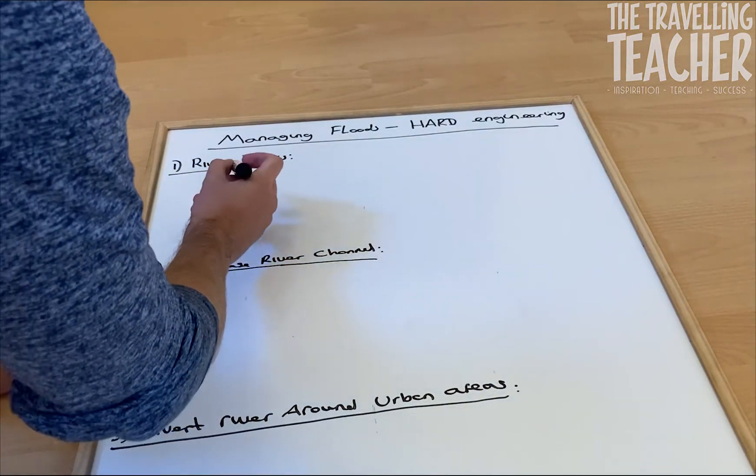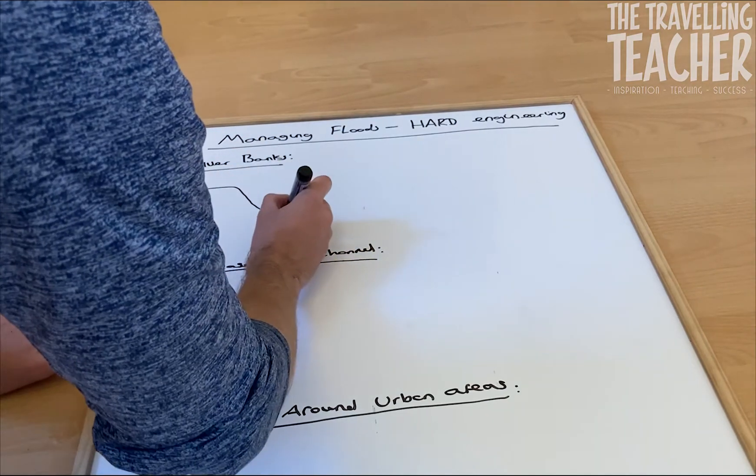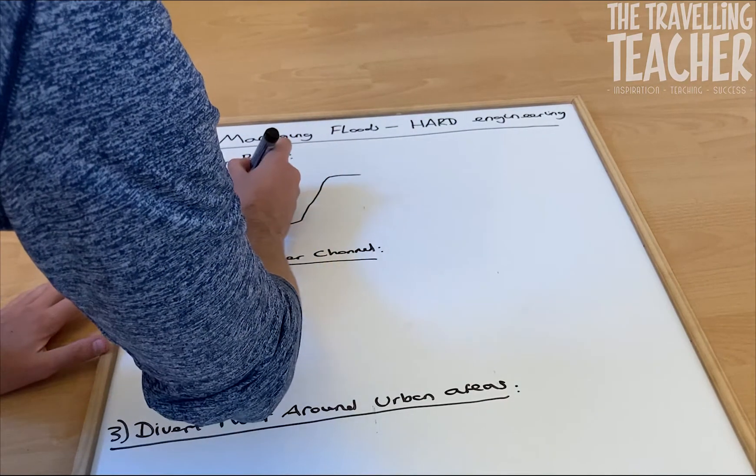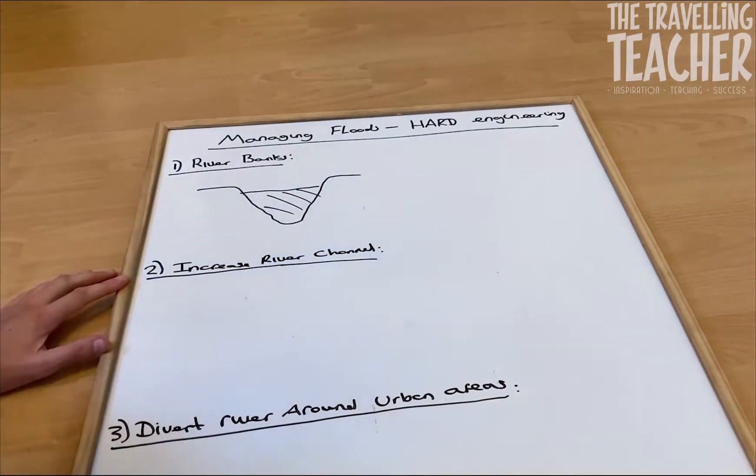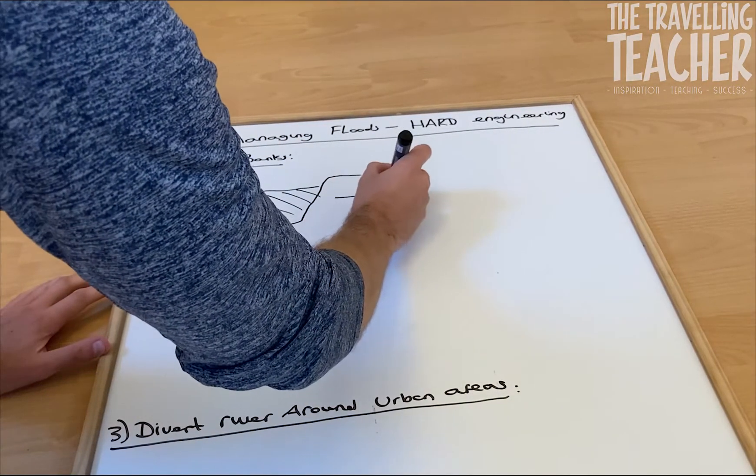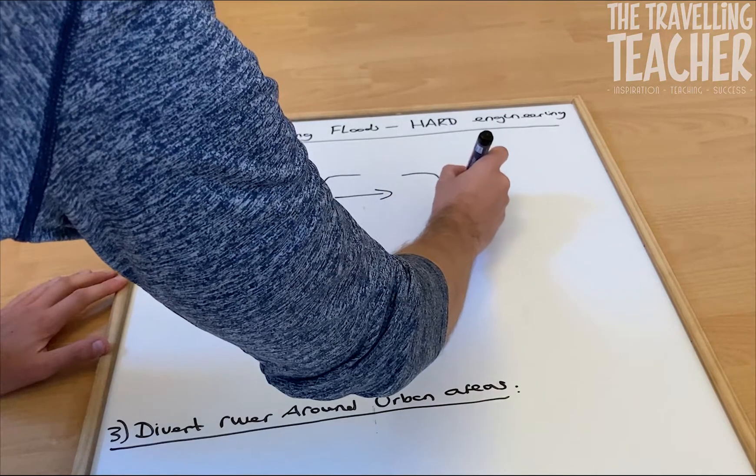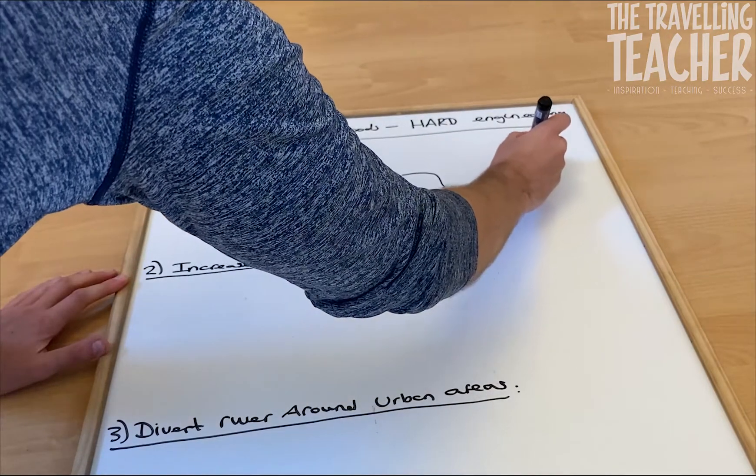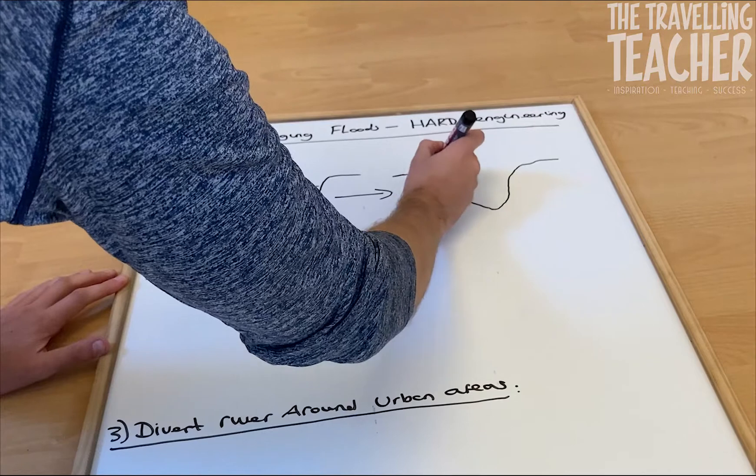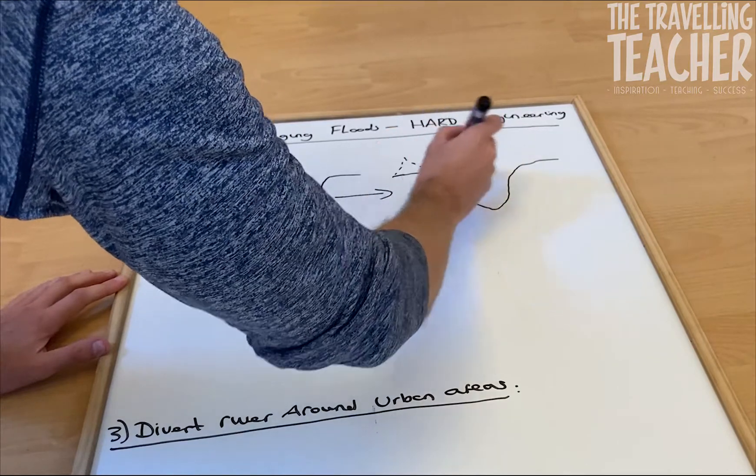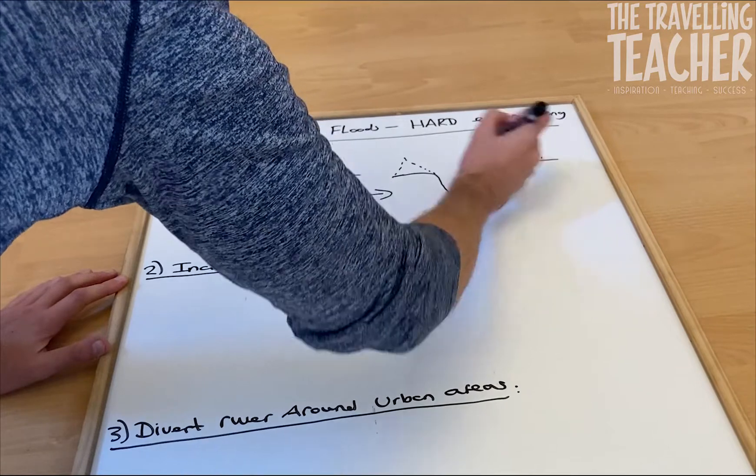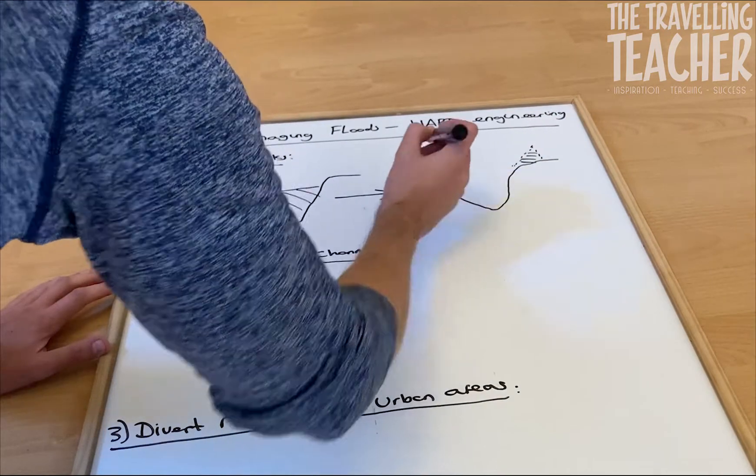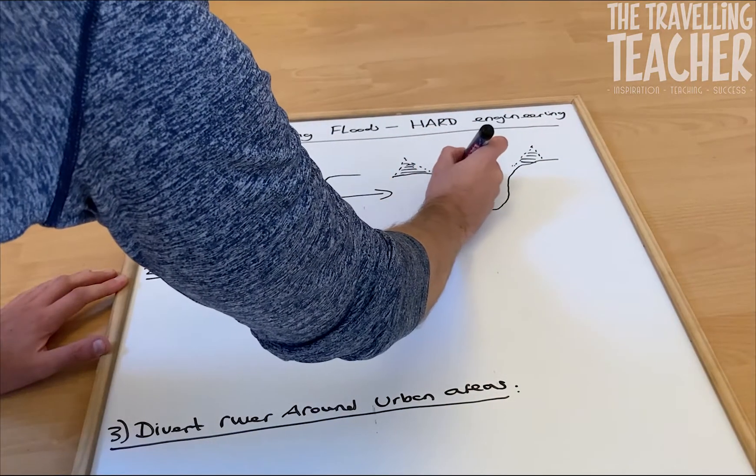So the first we're going to look at is our river banks. So there is just a normal river channel, a cross section of a river. What we want to do to that river, let me redraw that river channel again, is we want to increase the size of the river banks, just like that.